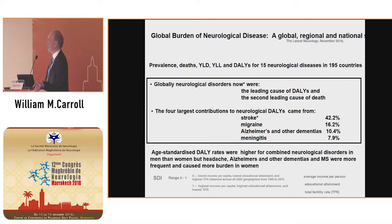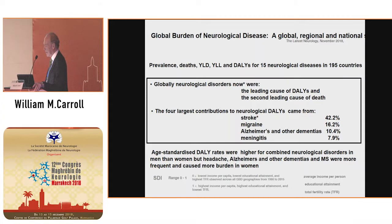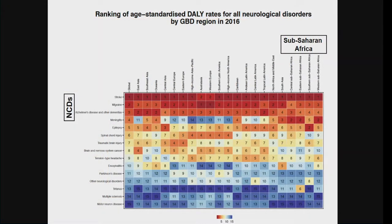Since stroke was included in the global burden of neurological disease, it's now the leading cause of disability and the second leading cause of death from neurological diseases. Of those, stroke accounts for 40%, migraine 16%, Alzheimer's and other dementias 10%, and meningitis 8%. This heat map shows the same data in a different fashion — non-communicable diseases grouped across Sub-Saharan Africa and through Asia, where these diseases are most heavily centred.